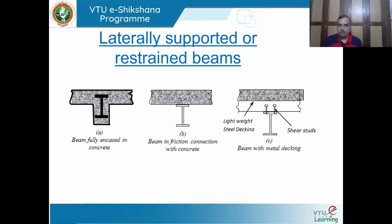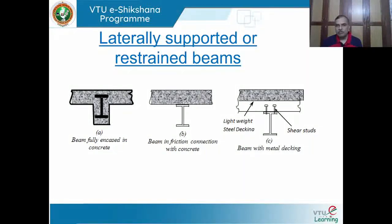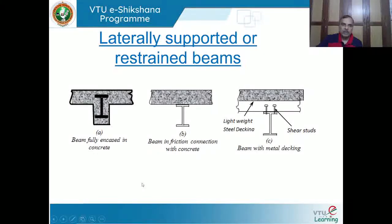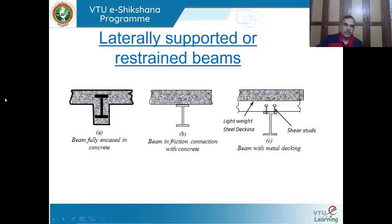A laterally supported beam is sometimes referred to as a restrained beam - restrained from bending in the lateral direction. One example is the I-section completely embedded in concrete, where composite behavior occurs. The compression flange is not going to bend in the lateral direction as there is no free space surrounding the element - it is completely restrained.